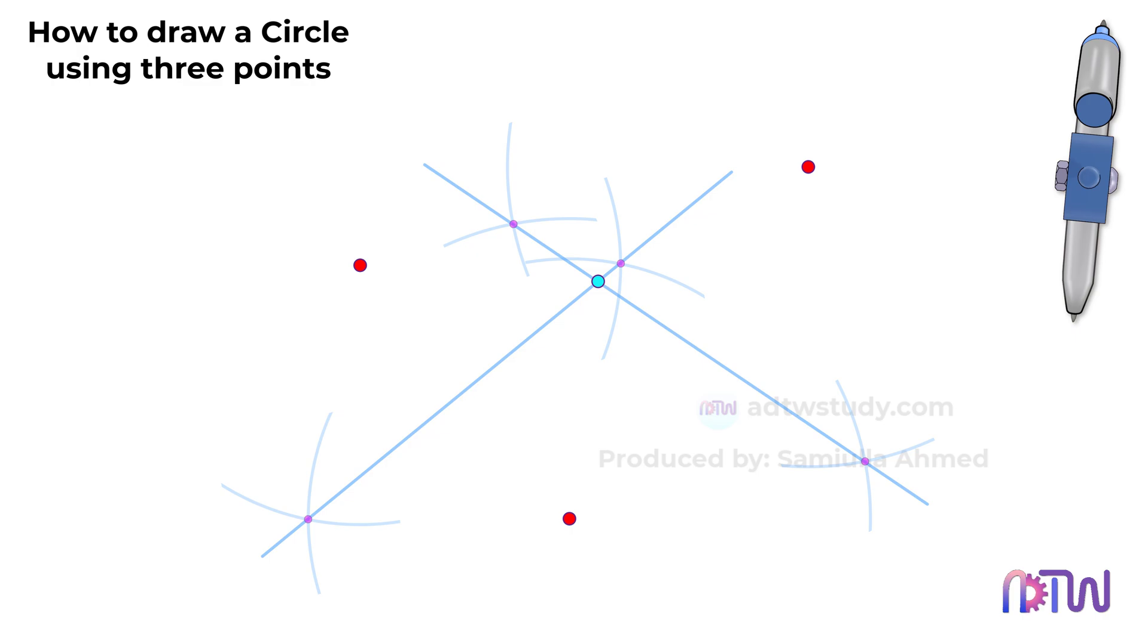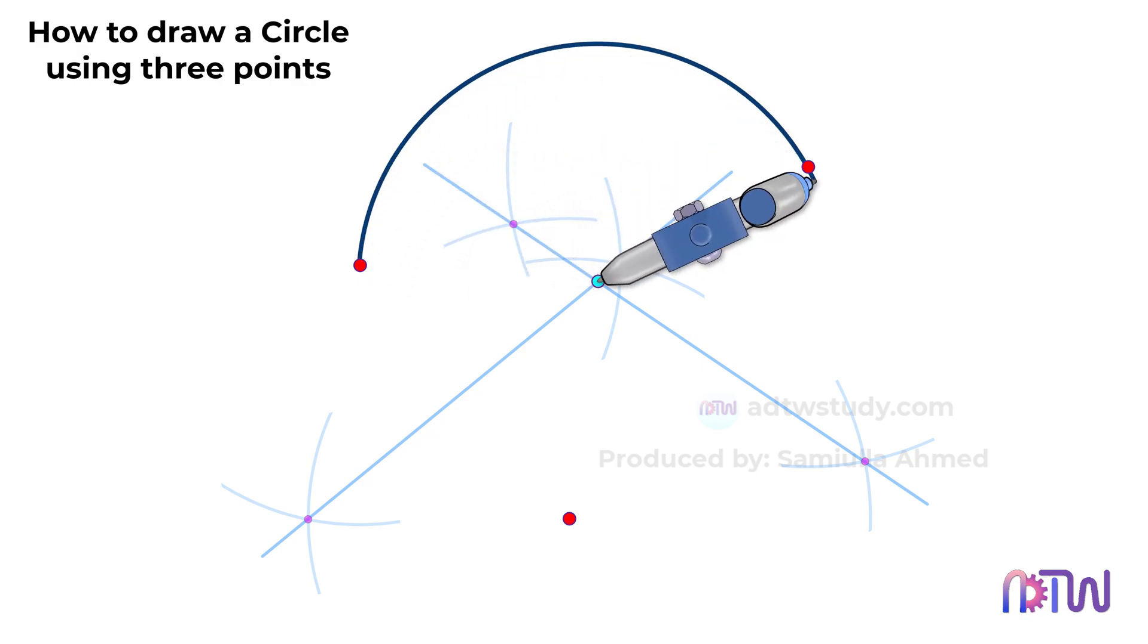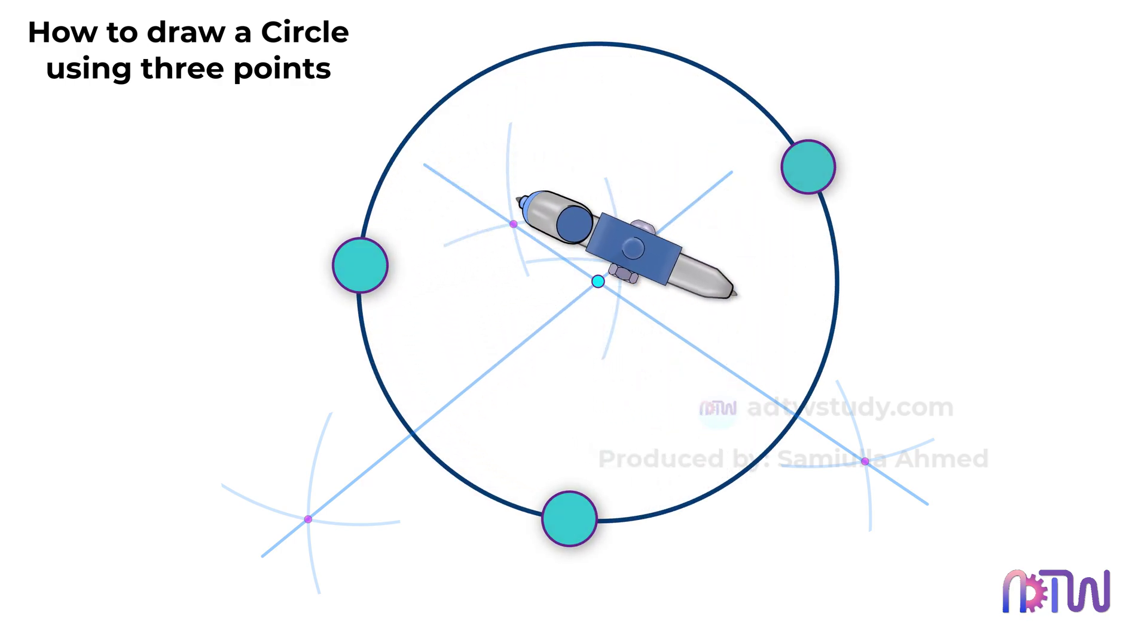Take the compass, place it on this center point and adjust its length to one of the points. Draw a circle and you will see that the circle passes through all three points.